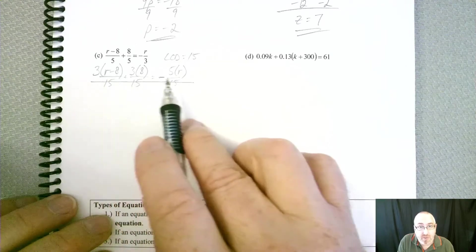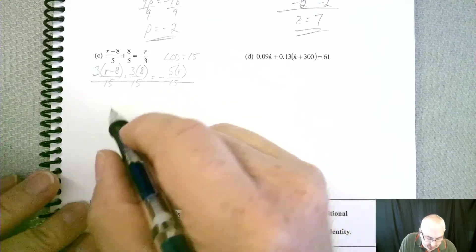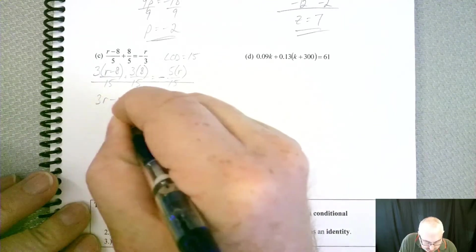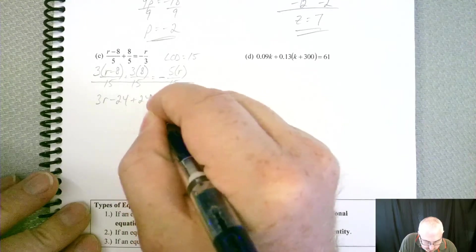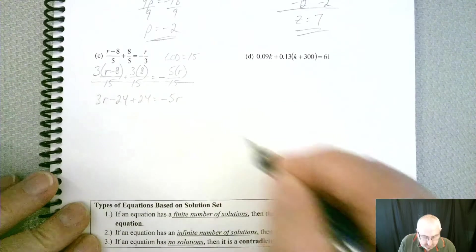So now we have no more fractions to worry about. So we can now distribute, get rid of those parentheses, and then start breaking it down, finishing it off. So if we distribute, we should get a 3R minus 24 plus 24 equals a negative 5R.